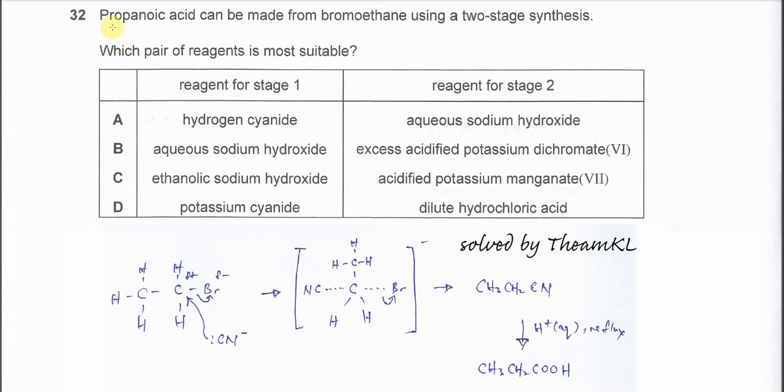Question 32: Propanoic acid can be made from bromoethane using a two-stage synthesis. This question is quite common in Cambridge A-level. First, we need to know how many carbons are in the reactant. The reactant bromoethane has two carbons, and the product propanoic acid has three carbons. When the reactant forms products, there is addition of one carbon.